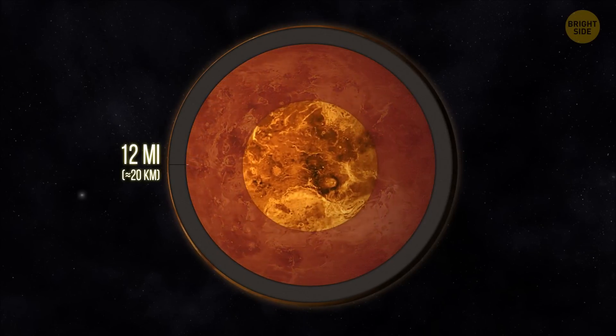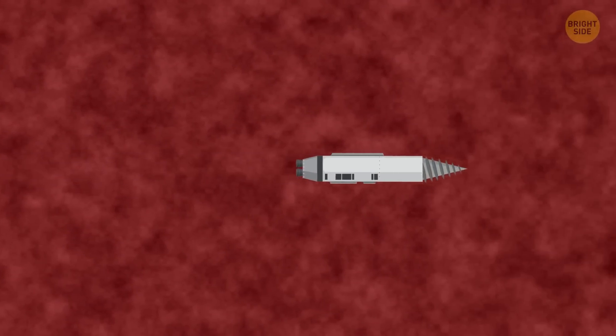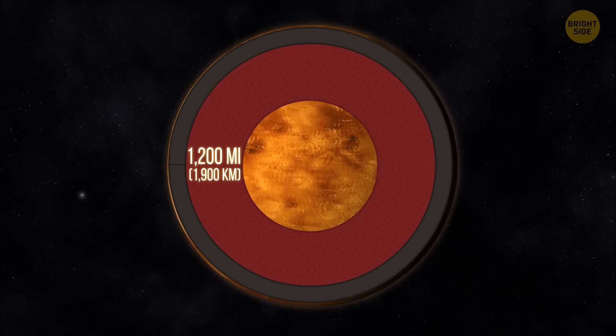It consists mostly of basalt and is almost 12 miles wide. The next layer is a molten rocky mantle. After some time, you get the feeling it'll never end. No wonder. It's 1,200 miles thick.